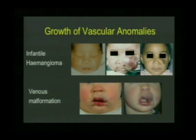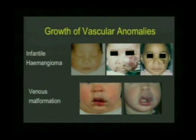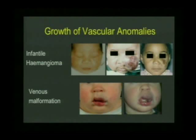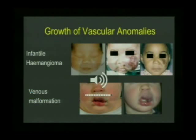Venous malformations and other vascular malformations grow quite differently — they don't have this three-phase life cycle. They are present at birth, even if not clinically obvious. Vascular malformations grow in a commensurate fashion with the patient. Over even a two-year period, you can see the slight blue expansion of the upper lip increasing as the child grows. The growth pattern between vascular tumors and vascular malformations is quite different.